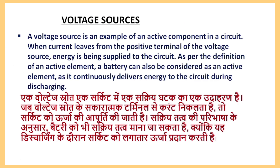Now let's see — the voltage source is an example of an active component. In a circuit, when current leaves from the positive terminal of the voltage source, energy is being supplied to the circuit. If the current is out of the positive terminal of the voltage source, this means that the component is an active element supplying energy to the circuit.